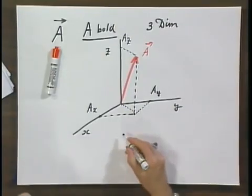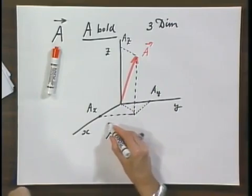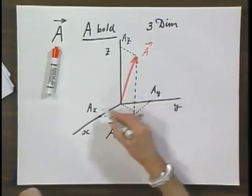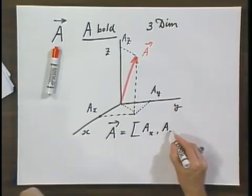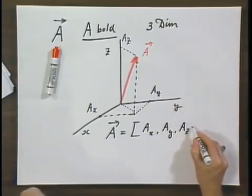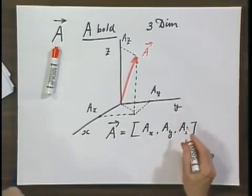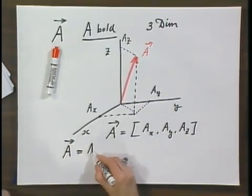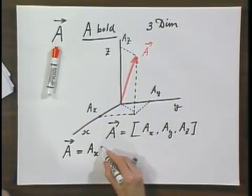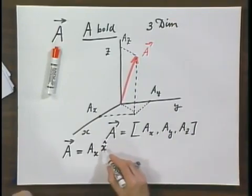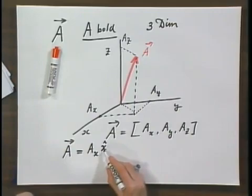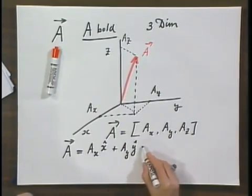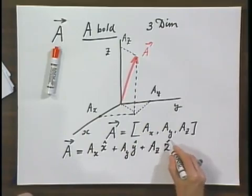And the vector notation that you may see in certain books are as follows. A, or some books write an A in bold, and then they may simply give you these three components: A of X, A of Y, and A of Z. I will not do that. I prefer a different notation. I will write almost always that A with an arrow over it is the X component of A in the direction of X. This is the unit vector in the plus X direction. Plus A of Y, unit vector in the Y direction. Plus A of Z, unit vector in the Z direction.